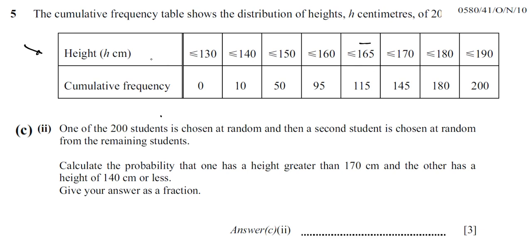One of the 200 students is chosen at random, then a second student is chosen at random from the remaining students. We need to calculate the probability that one has a height greater than 170 centimeters and the other has a height of 140 centimeters or less.